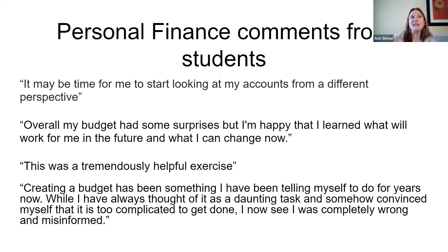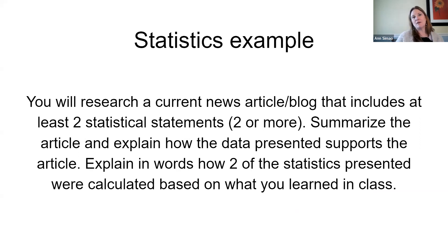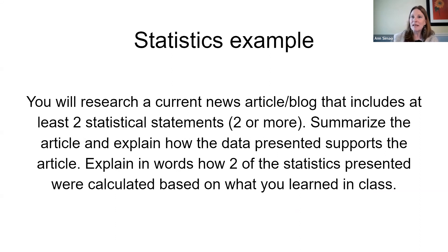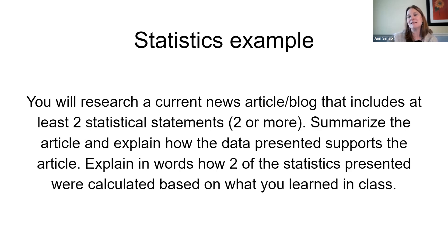I have different budgeting ideas and budgeting spreadsheets that students can use as examples. On the other hand, a lot of students will share different apps they use for budgeting and determining how to save or spend their money. During the statistics section, students have to find a news article or blog that has at least two statistical statements of things we studied throughout the course. They have to explain the article and those two statistics — how they were calculated and how they impact the article — so you have to go beyond just how to calculate it and understand why it's presented the way it is. It pushes students out of the box to find an article, and it makes them look at information they're hearing in a different way because now they understand the statistics behind it.